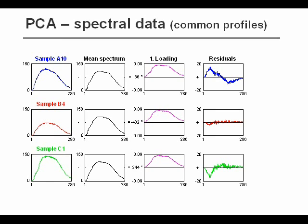The score value would be the amount of this spectrum of this common profile in each of the individual samples. So we see that for the first blue sample, the score value is written as 86 next to the loading vector. For the red sample, the score is minus 432. And for the green one, it's 344. So we see that the scores, they differ for every sample, whereas the loading is what they have in common.